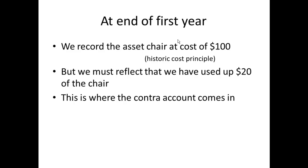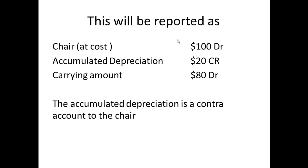At the end of the first year, we record the asset chair at its cost based on the historic cost principle — so chair at cost: $100. But we must also reflect that we've used up $20 of the chair, and this is where the concept of the Contra account becomes valuable. We would show: chair at cost $100, less accumulated depreciation $20, which would be a credit balance, giving a carrying amount of $80.